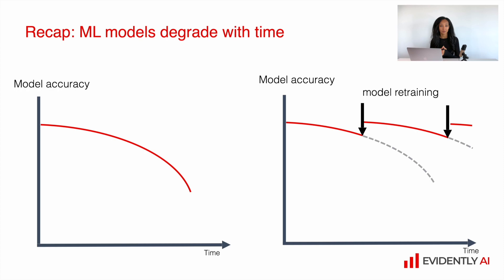Our models interact with the real-world environment and this environment is very rarely stable. Things tend to change and this is why our models tend to degrade. Our goal is to detect the moment when model quality degrades, intervene and improve it so that we can have our machine learning service back on track.